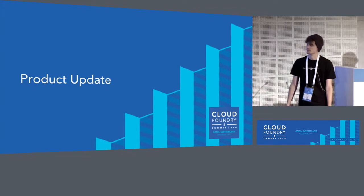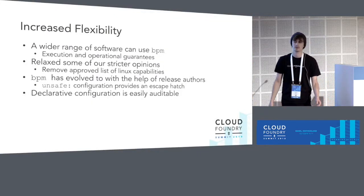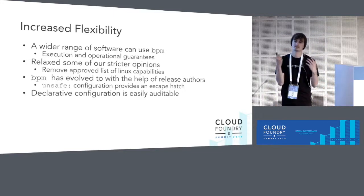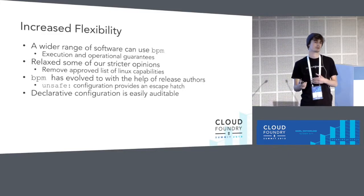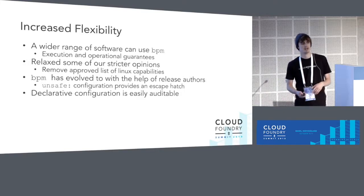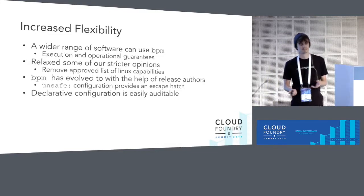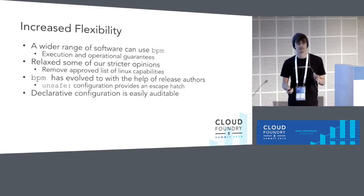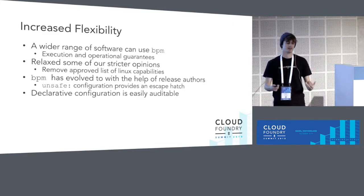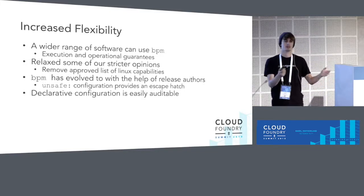Let's go over a product update and talk about what we've been working on in the last year. One of the biggest things has been providing increased flexibility. When we initially dreamed up BPM, we knew its strict opinions would only support about 90% of software in Bosch jobs, so we wanted to bring BPM to a wider range of software. One way we've done that is by relaxing some stricter opinions. A perfect example is Linux capabilities — we started with an approved list of capabilities that people could request, but it didn't scale at all and was really hard to manage.